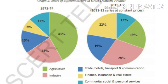Let us see the share of different sectors in gross domestic product. During this 43-year period, the output share of the agriculture sector has fallen drastically — it decreased by 24%, from 43% to 19%. The industrial sector increased from 22% to 28%, an increase of 6%. In the share of service activities, there is a tremendous change.